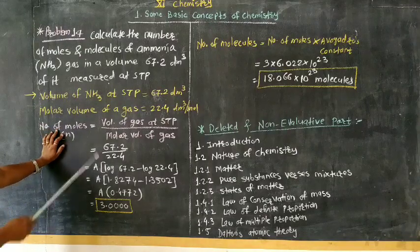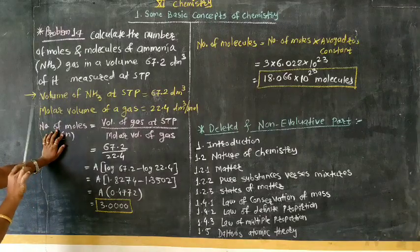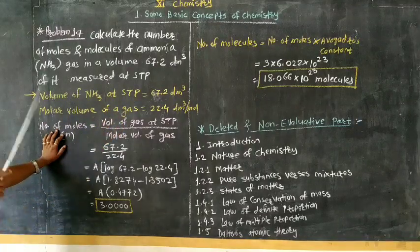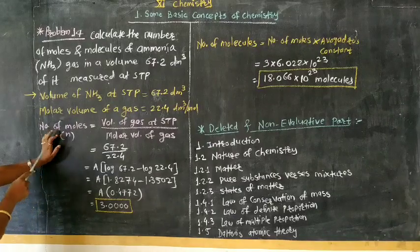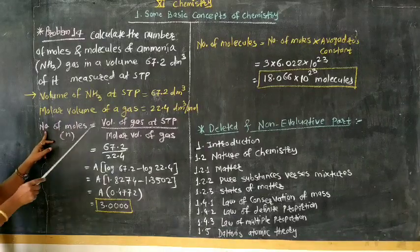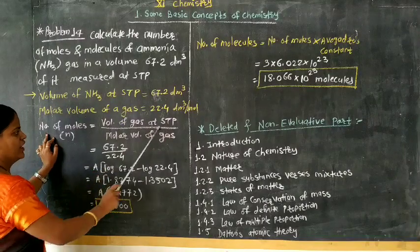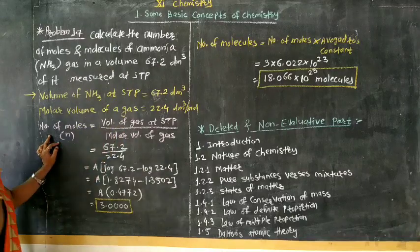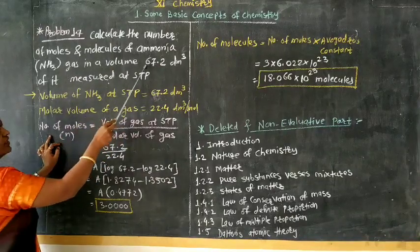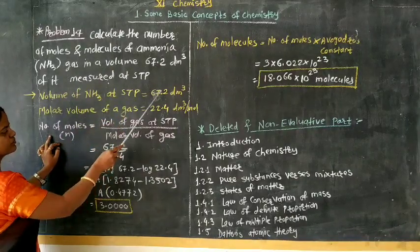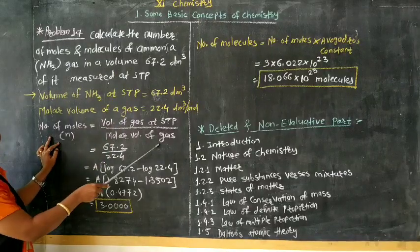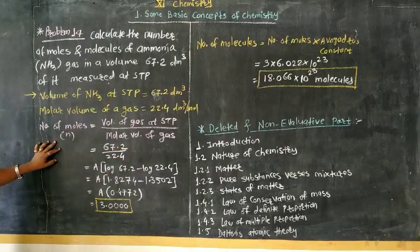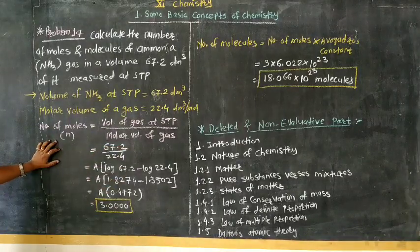First formula we studied in previous example: mass upon molar mass. But here it is not the formula. Not the correct formula. Now here volume relation is given. So according to volume relation, second formula to calculate number of moles is equal to volume of gas at STP upon molar volume. Volume of gas at STP is given: 67.2 dm cube. And what should be the molar volume of gas? Remember, 22.4 dm cube per mole is the molar volume of gas.